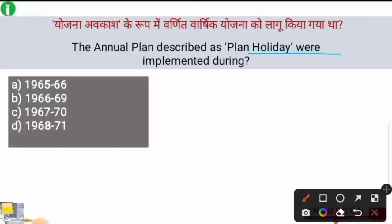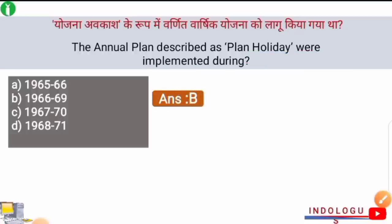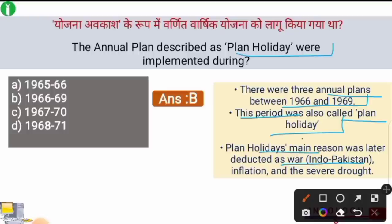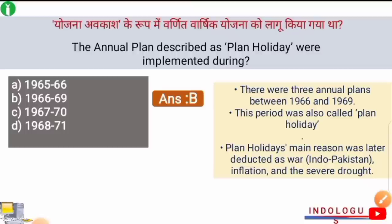Next question: The annual plans described as 'plan holidays' were implemented during which period? The right answer is option B — 1966 to 1969. There were three annual plans: 1966–67, 1967–68, and 1968–69. After the miserable failure of the Third Five Year Plan, the country decided to create annual plans with annual goals completable within one year. The plan holiday's main reasons were war (Indo-Pakistan), inflation, and severe drought in the country.